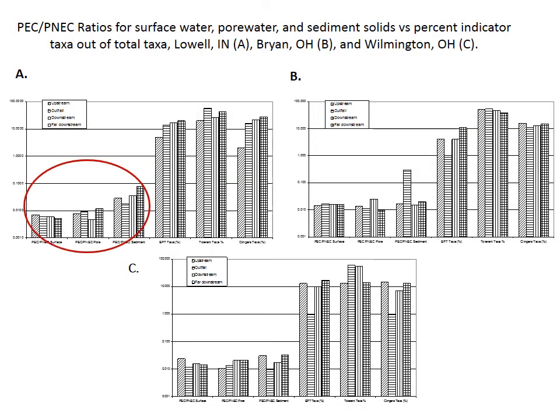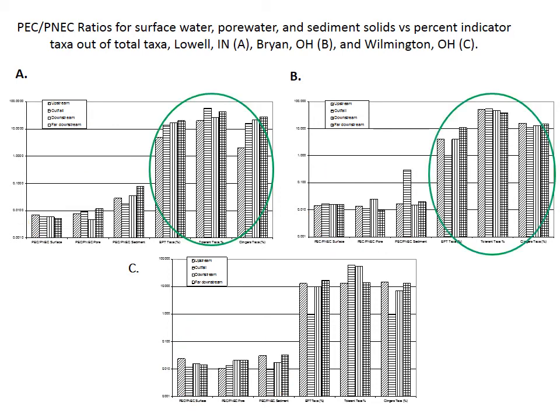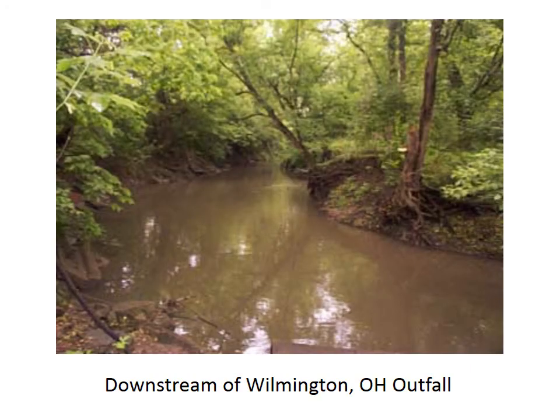As you can see from this figure, the PEC-PNEC ratios upstream, downstream, far downstream, and at the outfall are well below one, indicating low predicted risk to the environment. The percent EPT taxa, tolerant taxa, and clinger taxa are also shown on the right of this figure. When comparing the observed biota at the different locations with the predicted risks and habitat quality in a weight of evidence approach, there is no clear correlation between the predicted risk, the occurrence of biota, and habitat quality.